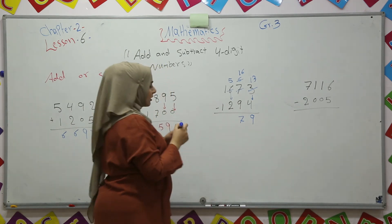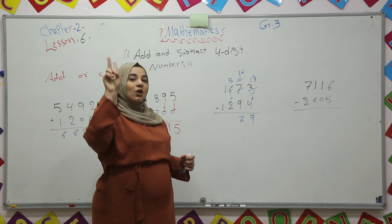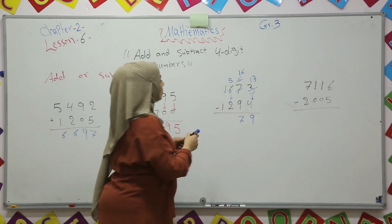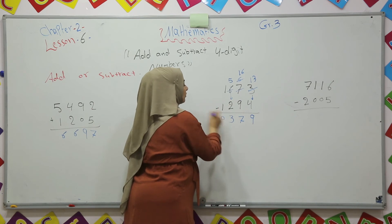Five minus two. Count back two numbers from five. Five, four, three. So it is three. One minus one equals zero.